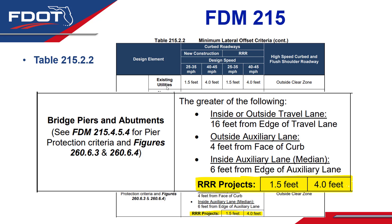This generally follows the past successful practice of our other roadside items. For example, as you can see for existing utilities above, this is similar — 1.5 and 4 feet.